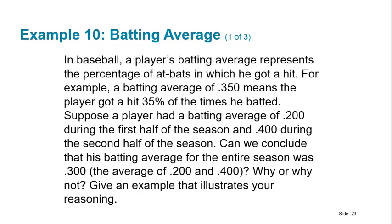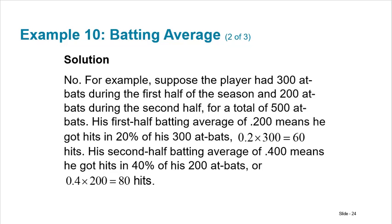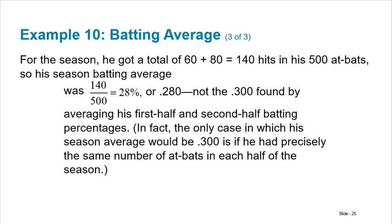In baseball, a player's batting average represents the percentage of at-bats in which he got a hit. A batting average of .350 means the player got a hit 35% of the time. Suppose a player has a batting average of .200 during the first half of the season and .400 during the second half. Can you conclude his season average was .300 — the average of .200 and .400? No, because he didn't necessarily have the same number of at-bats in each half. You'd need the actual at-bat counts to calculate a true weighted average.